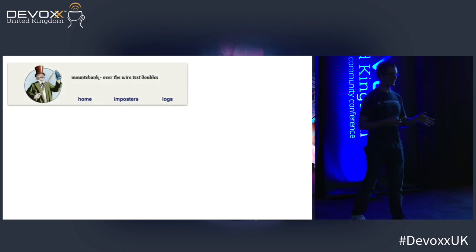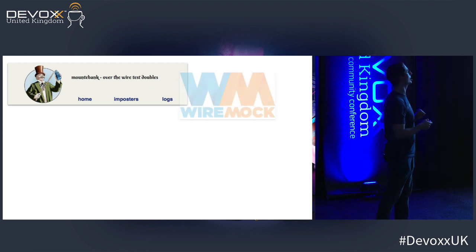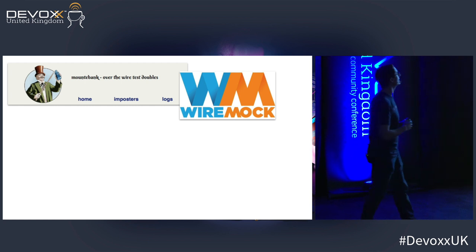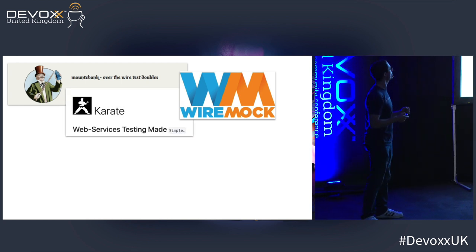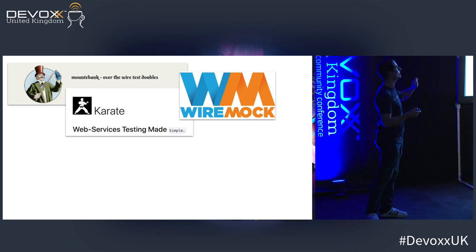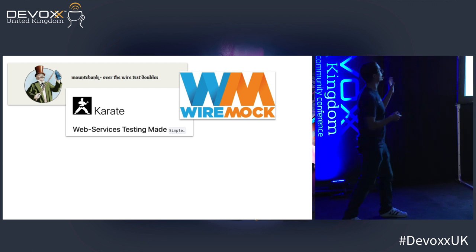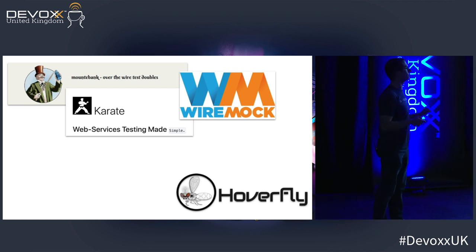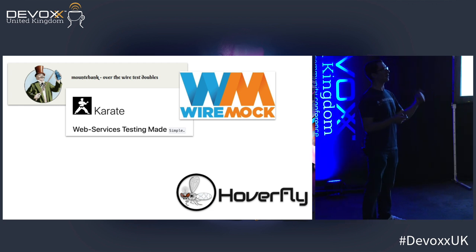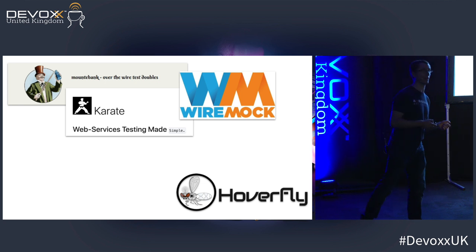There are a bunch of tools in this space. If you're into Node, Mountie Bank from the ThoughtWorks crew is a very nice virtualization tool. I'm sure many of you know and love WireMock, created by Tom Akehurst, who's based in London. There's Karate, a Java-based service virtualization tool — I recently learned it's also a contract-based testing tool. Hoverfly is the one I worked on; it's a Go-based system so it has a very lightweight runtime, but it has Java, .NET, and Python language bindings. And if you're more in the .NET space or old school, SoapUI has some nice functionality for spinning up fake services.